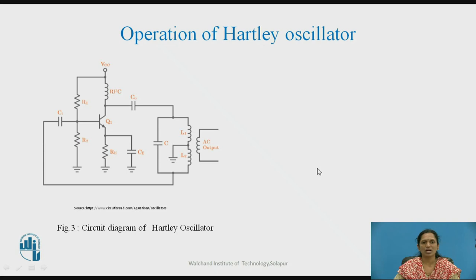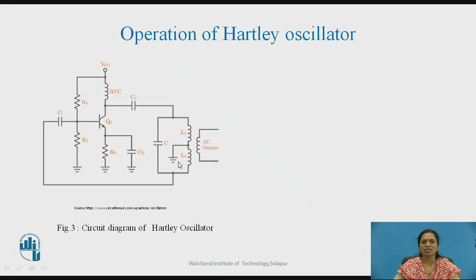This is the circuit diagram for the Hartley oscillator. A voltage divider bias technique provides biasing for the amplifier. An RF choke is used to block AC and pass the DC signal. A capacitor is used to couple the output voltage to the tank circuit. The output voltage is given to the tank circuit and the feedback voltage is taken through L2, which is provided back at the input of the amplifier.